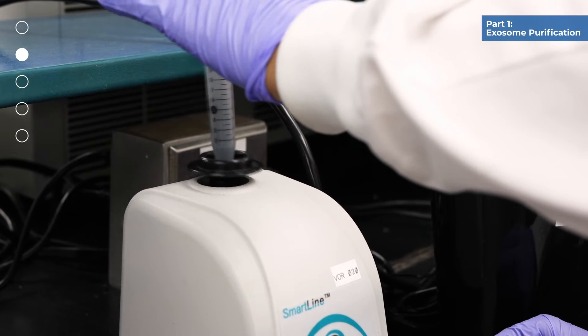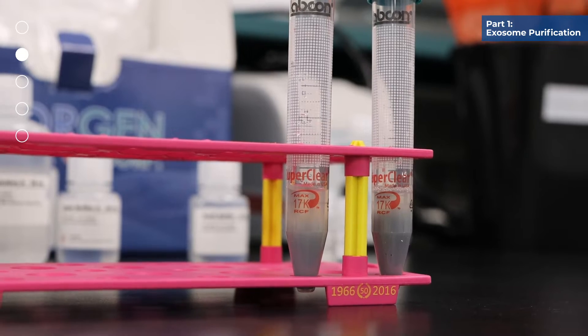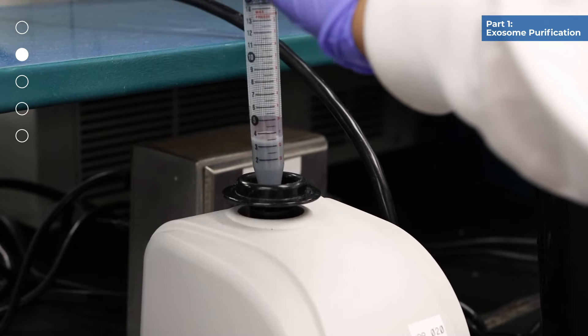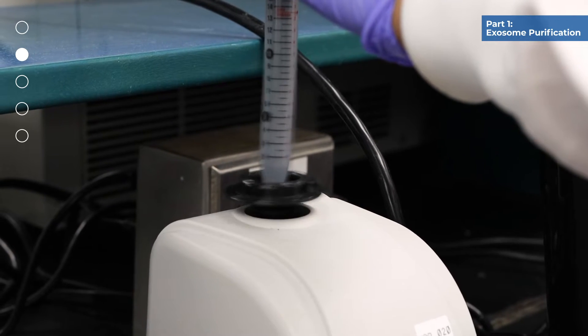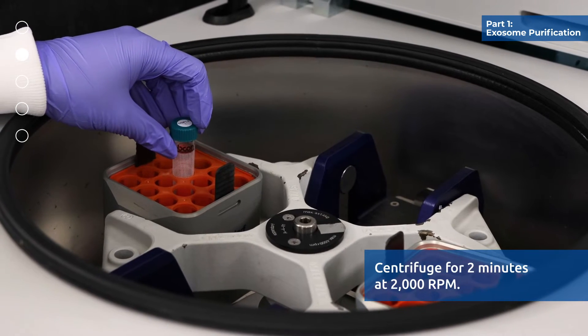Mix well by vortexing for 10 seconds and let stand at room temperature for 5 minutes. Mix well by vortexing for 10 seconds. Centrifuge for 2 minutes at 2000 rpm.